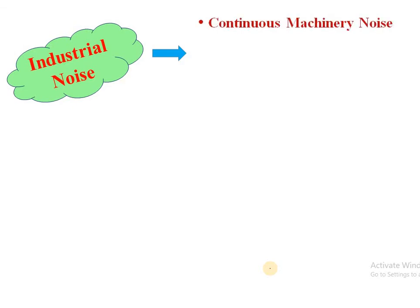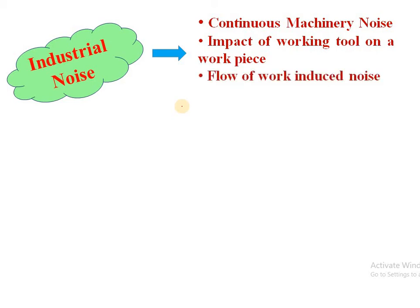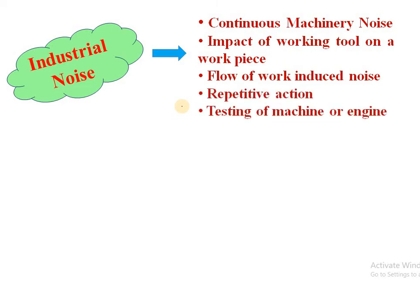As engineers we have to deal with industrial noise. Industrial noise is due to continuous machinery noise from machines like riveting, press machines, and lathe machines. Next is the impact of a working tool on a workpiece, as in press machines or forging, which creates a huge amount of noise. Then there is flow-induced noise from assembly lines and fitting operations. Repetitive actions and testing of machines or engines also create noise in industry.